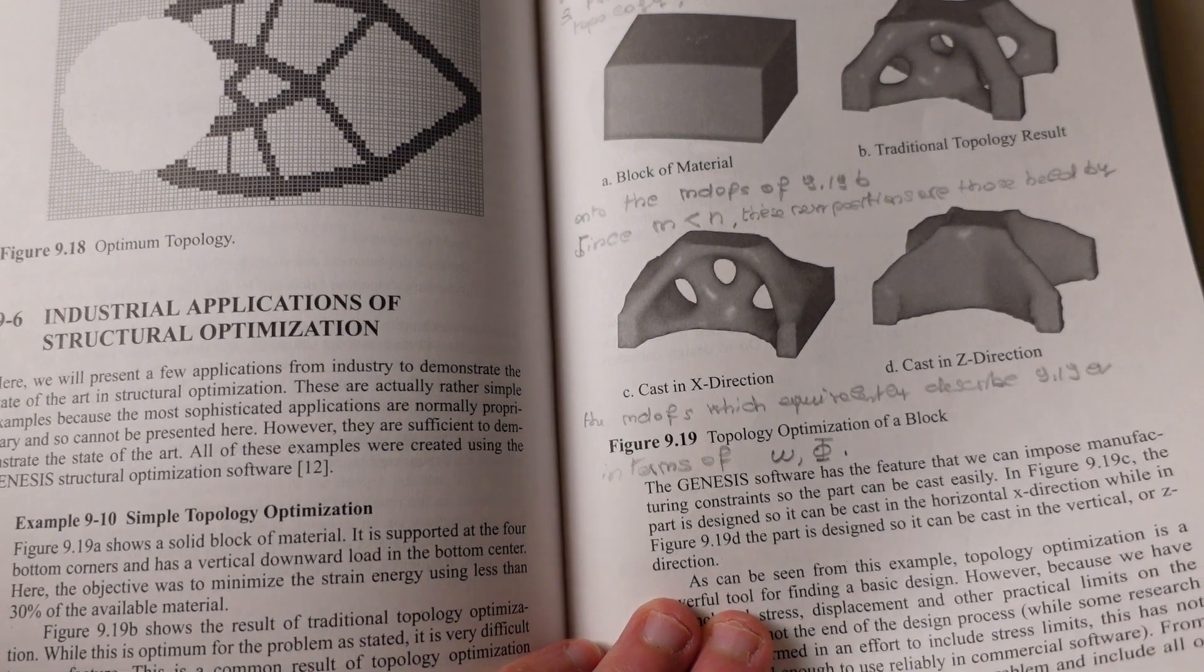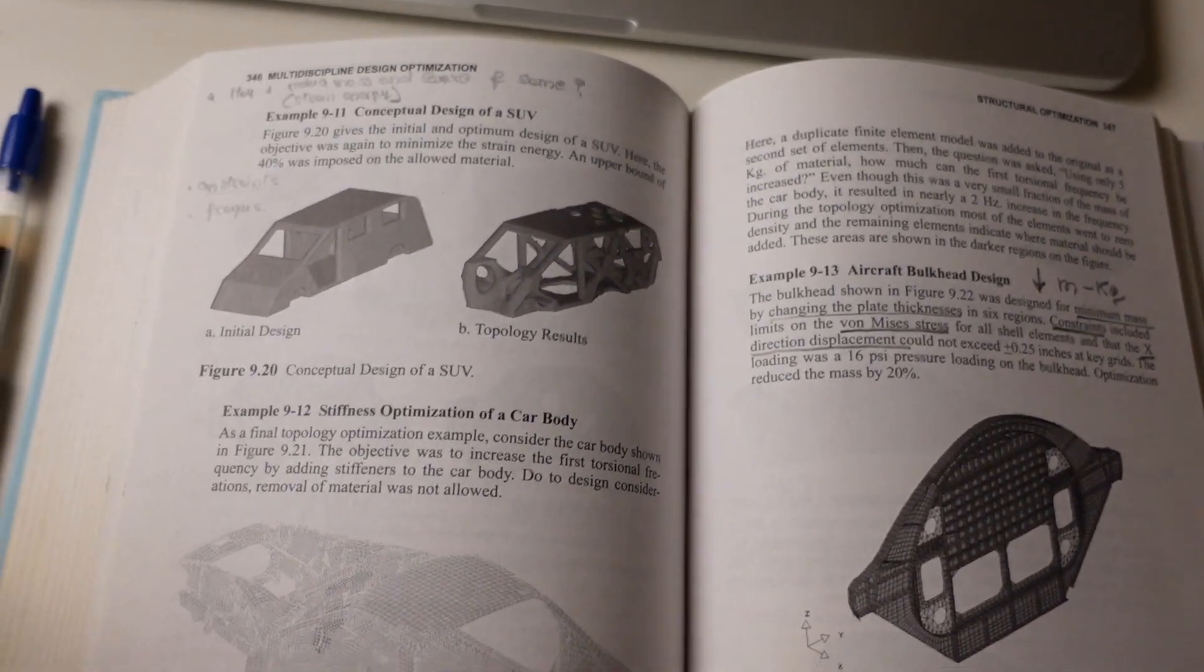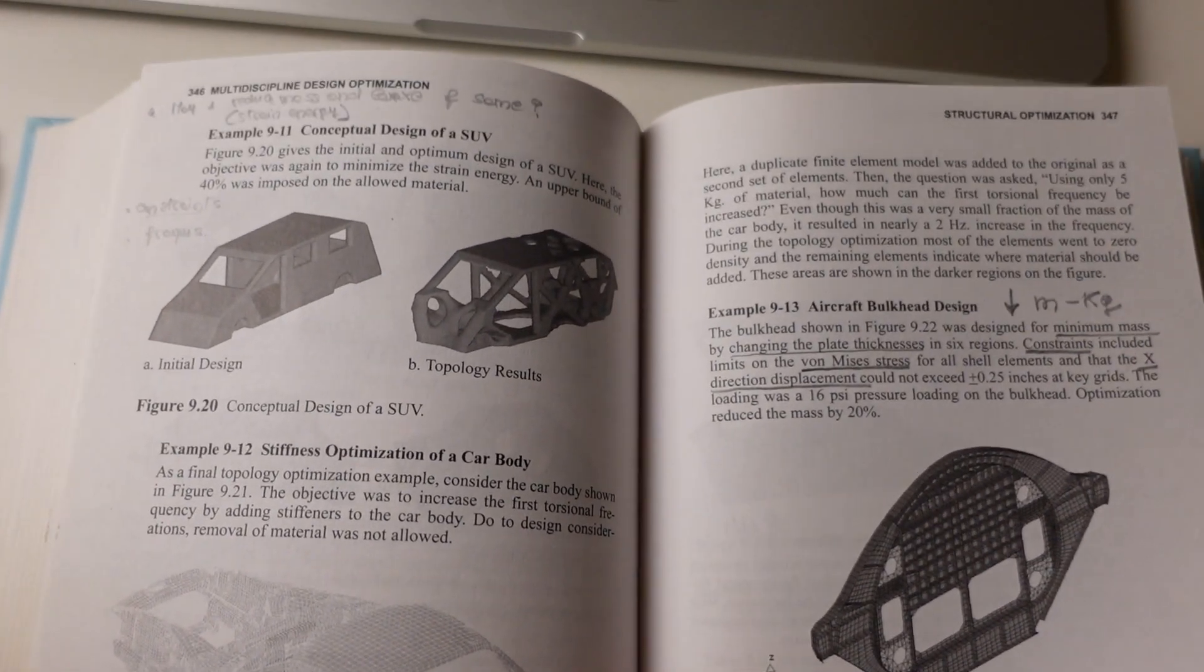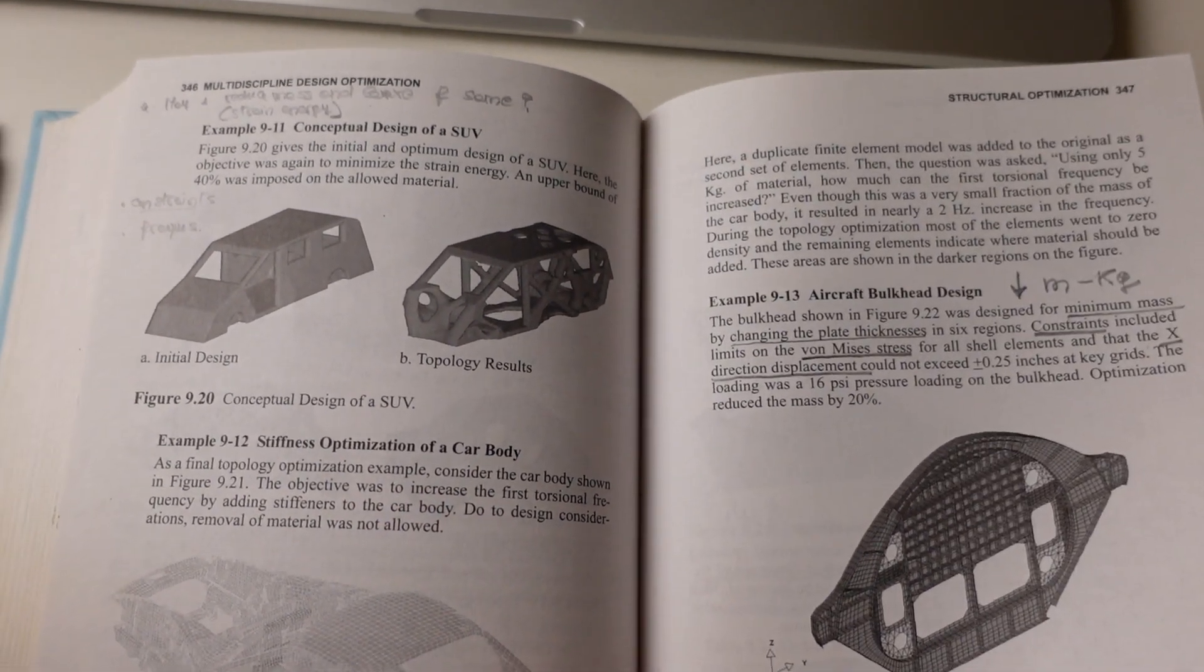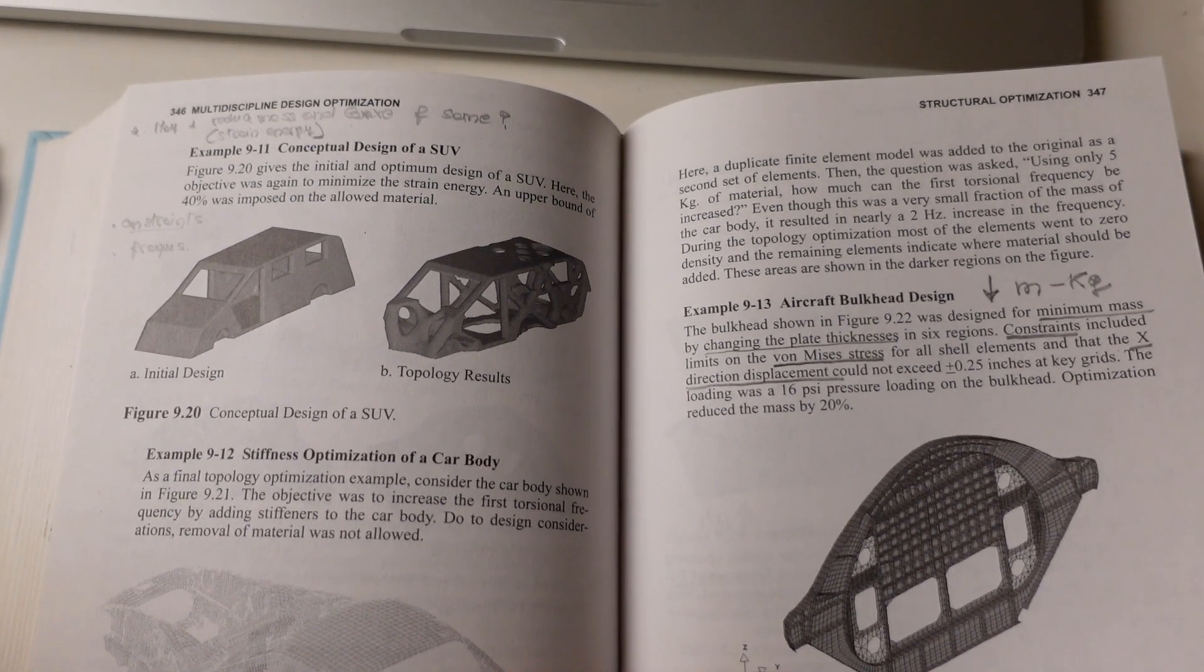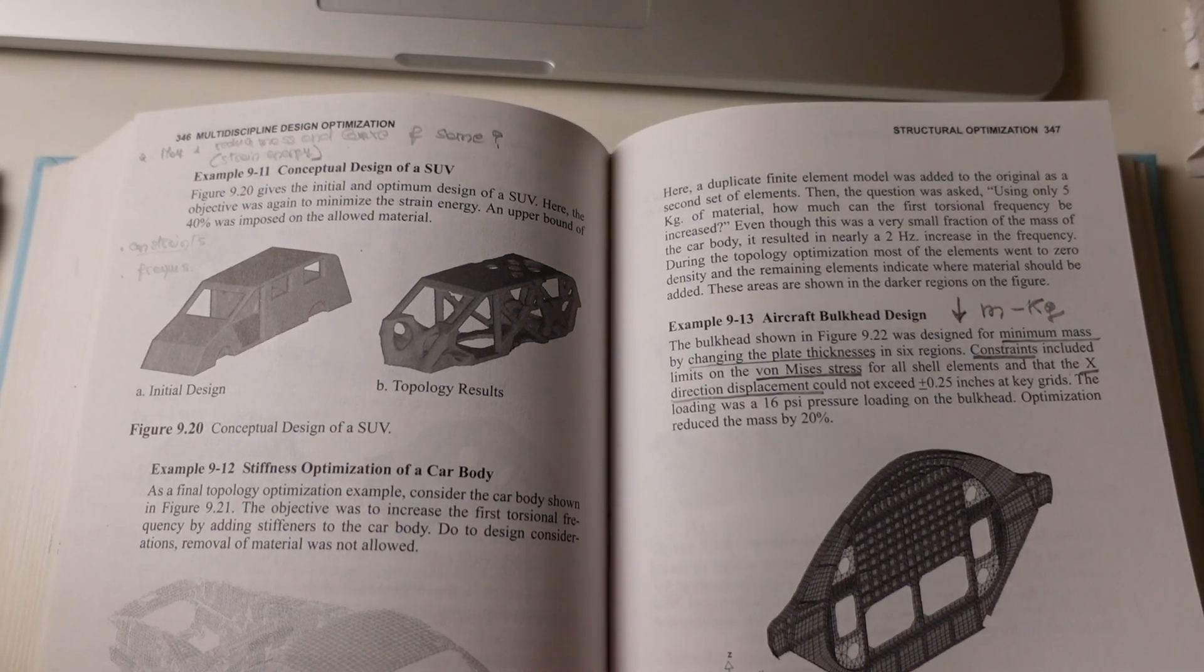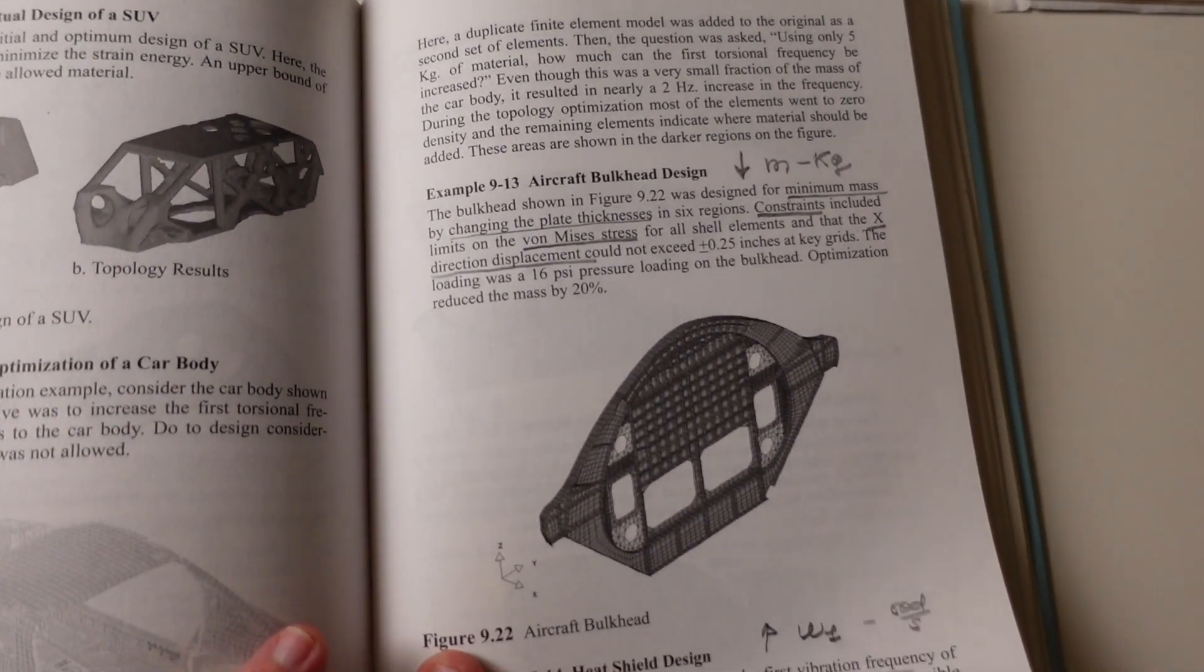What do you actually do using the topology optimization? Here's stiffness optimization of the car body, and those examples that are depicted here are examples that have been developed through Genesis, which is the general purpose software that was conceived of by van der Plaats.